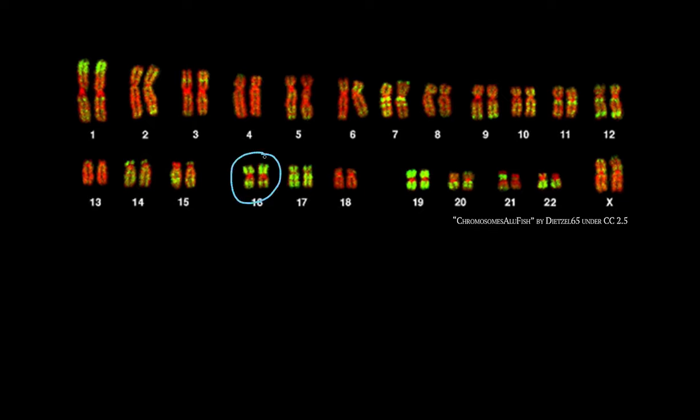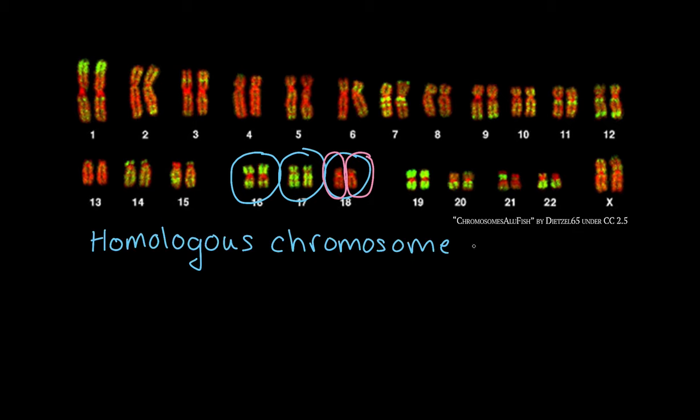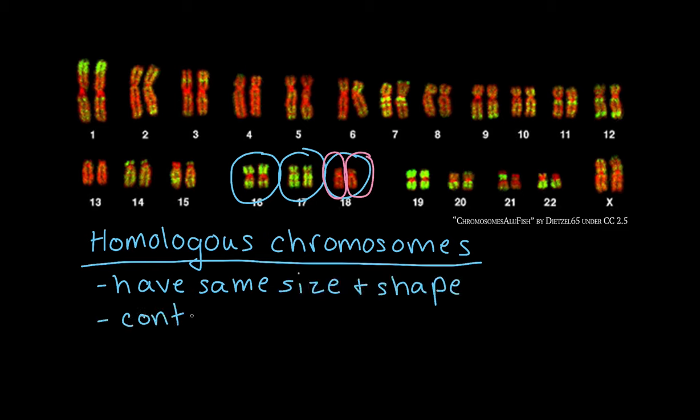Each of these is a pair of chromosomes. This is one chromosome, and this is the second chromosome. These paired chromosomes are called homologous chromosomes. Homologous chromosomes have the same size and shape. They also contain the same genes in the same locations.